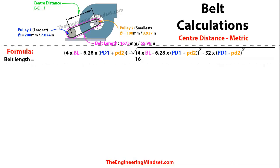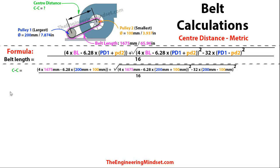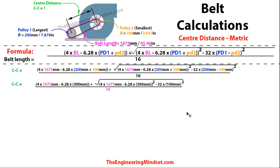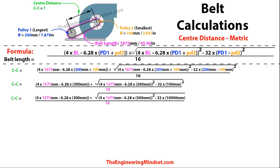In this calculation we need to find the distance between the two pulleys. We already know pulley one diameter, pulley two diameter, and the belt length, but we don't know the center distance. The formula is a bit more complex — don't worry if this looks intimidating, we're going to go through it step by step. First, drop in all the color-coded numbers from your example, then tackle the brackets first.